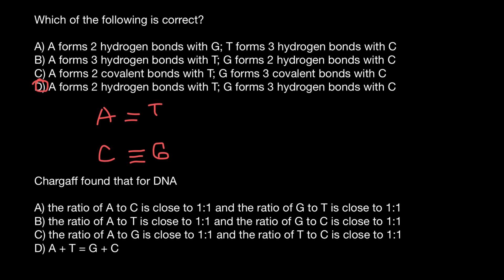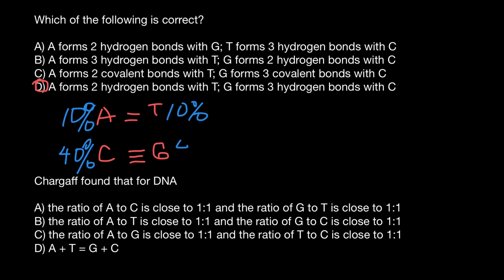If we have 10% adenine in our double-stranded DNA, because adenine always pairs only with thymine, that means we are going to have 10% thymine. Together, these two bases make 20%, which means the remaining 80% would be cytosine and guanine — so 40% cytosine and 40% guanine.